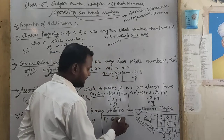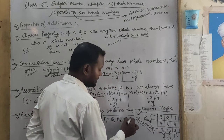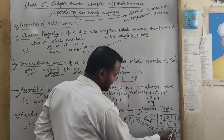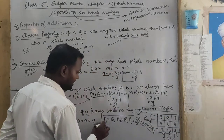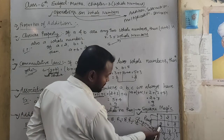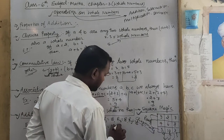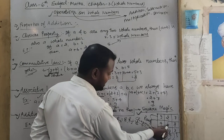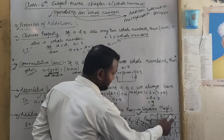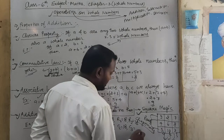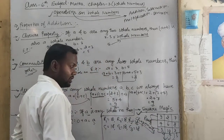Row 1: 9 plus 2 plus 7 equals 18. Row 2: 4 plus 6 plus 8 equals 18. Row 3: 5 plus 10 plus 3 equals 18. Column 1: 9 plus 4 plus 5 equals 18. Column 2: 2 plus 6 plus 10 equals 18. Column 3: 7 plus 8 plus 3 equals 18. Every row and every column gives 18. Diagonal 1: 9 plus 6 plus 3 equals 18. Diagonal 2: 7 plus 6 plus 5 equals 18.